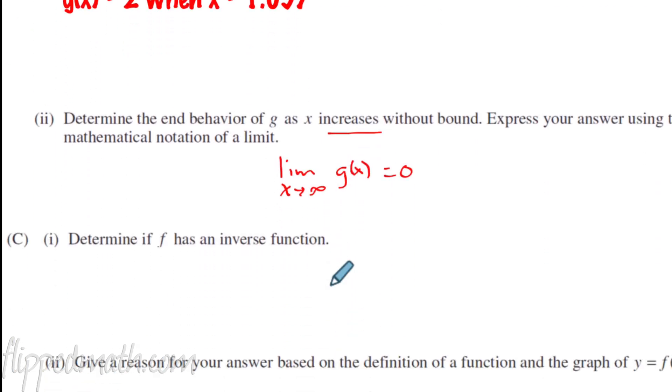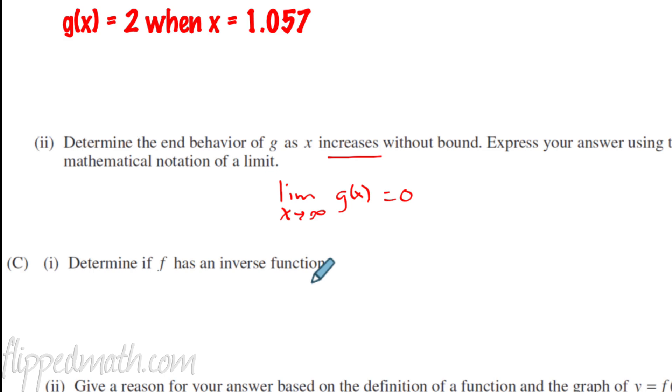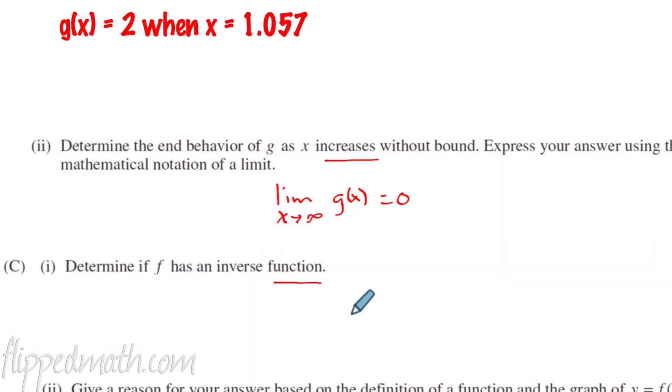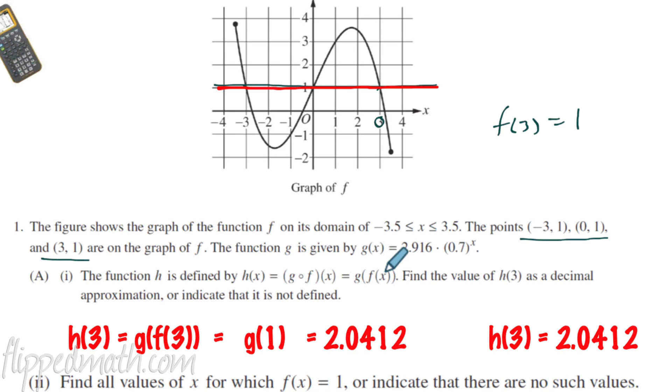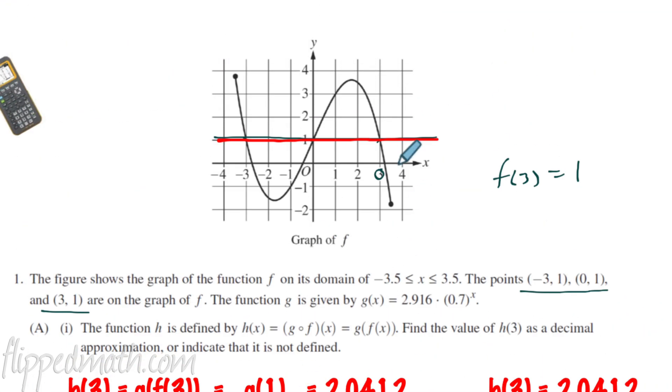Part C here. Determine if f has an inverse function. So it has to be a function, the inverse. Let's go up and look at our graph right now. We're looking at f. So notice before, like they told us, we had these three points that were on the line and we used that information later, right? Well, we're kind of going to use it again because, you know, here's f. We have three inputs that will give you one output. So let me write that down.